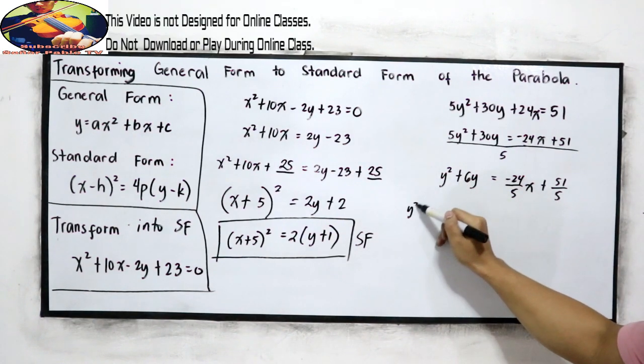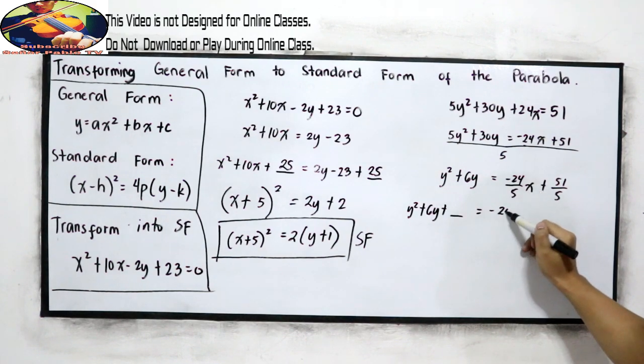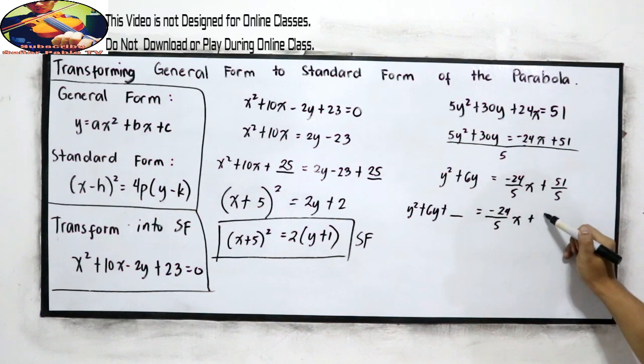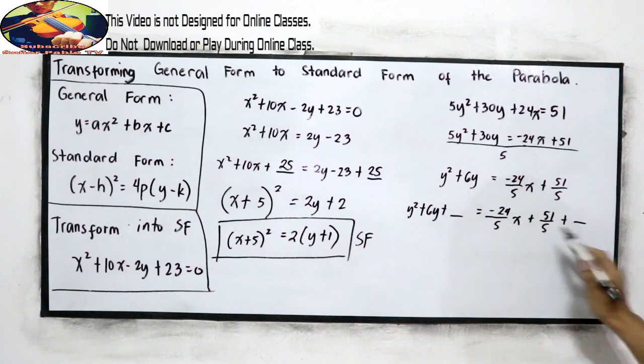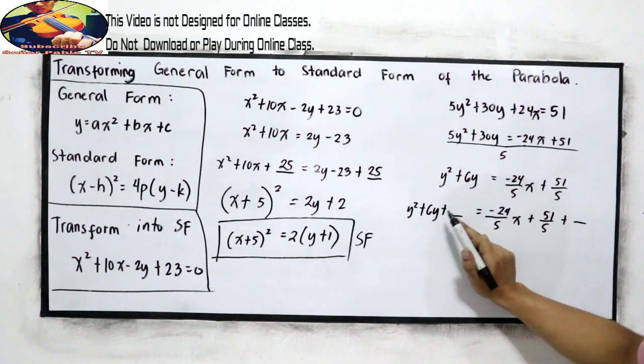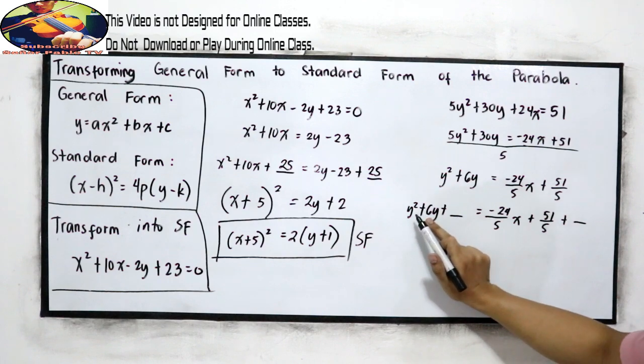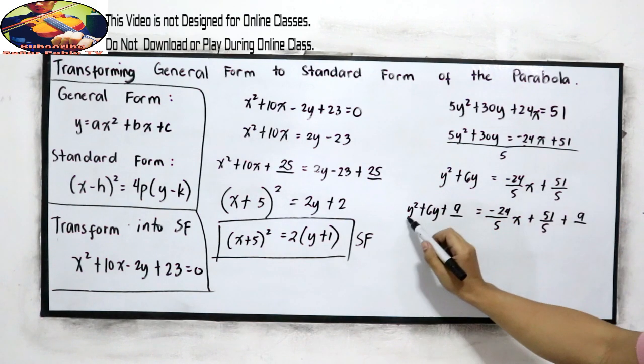Now, y squared plus 6y plus blank equals negative 24 over 5x plus 51 over 5. So we added blank, we need to add blank on the right side. Now, get the third term. Middle term, 6 divided by 2, that is 3. 3 squared, 9. Added 9 on the left. Added 9 on the right side.